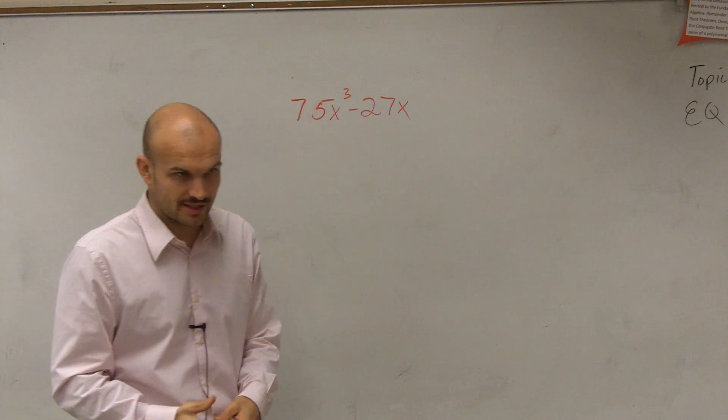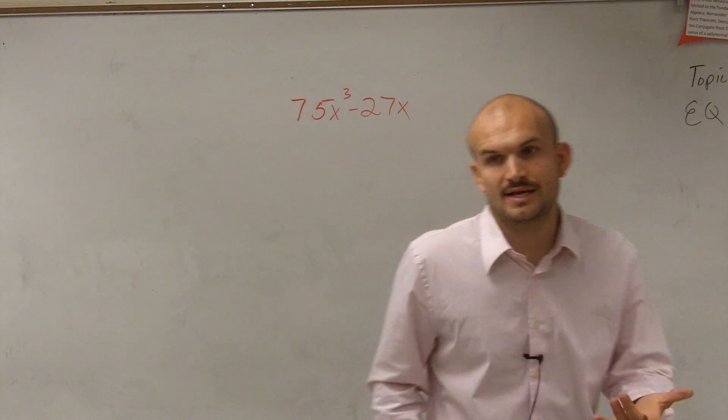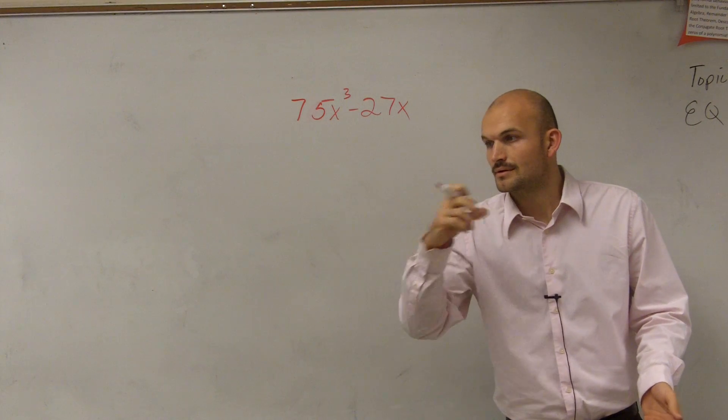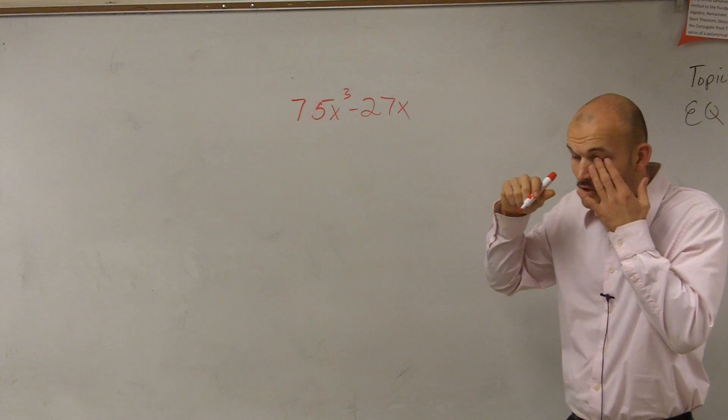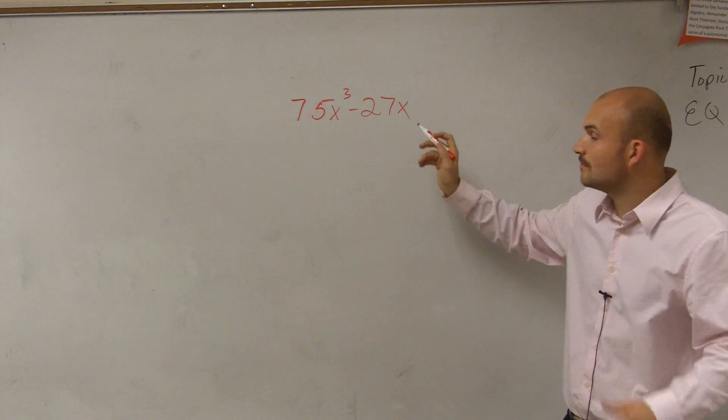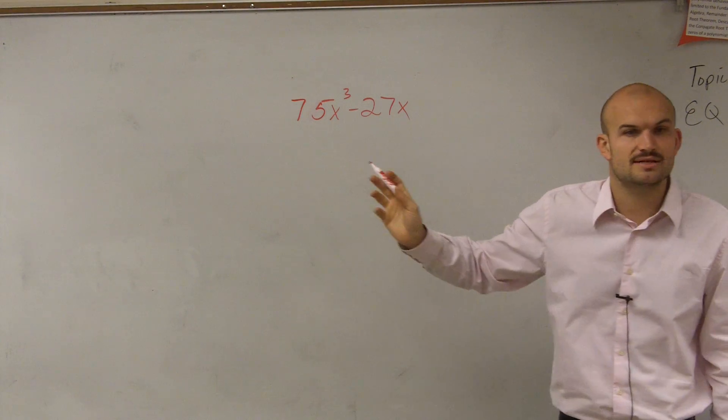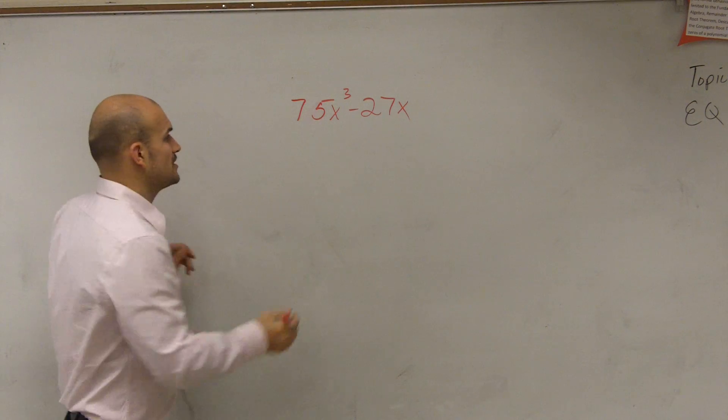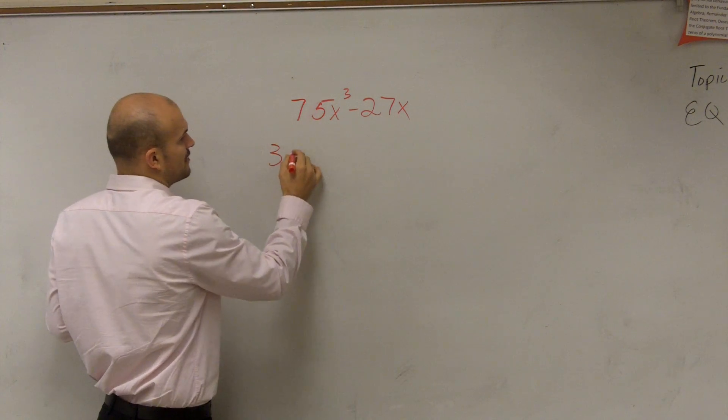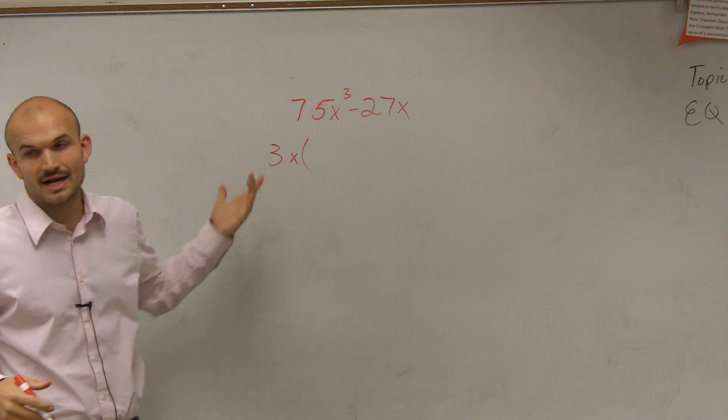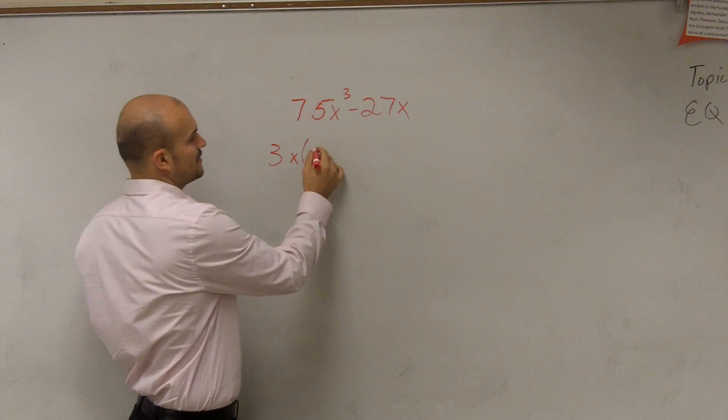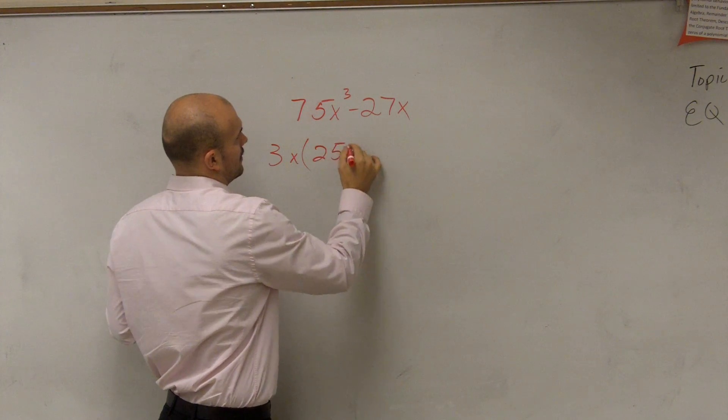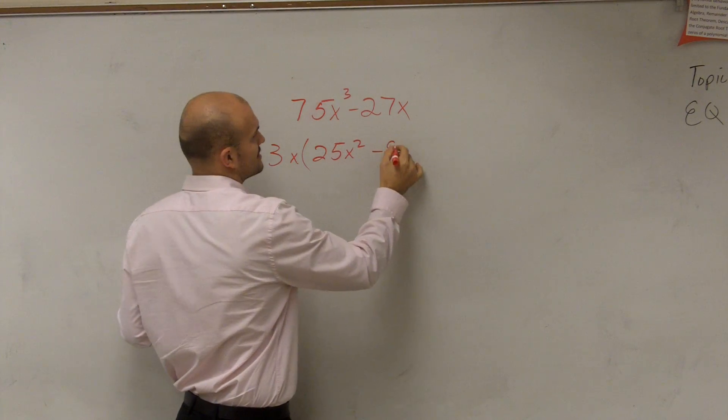So the first thing we always want to look into is seeing if there are any common factors they share. And did you find one? Close. But what do 75 and 27 share? 3. And they both have an x, so we can actually factor out an x as well. So when I factor out a 3x, that means when I divide out a 3x, I'm left with 25x² - 9.